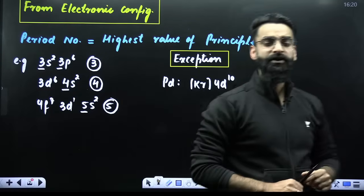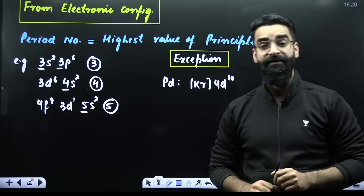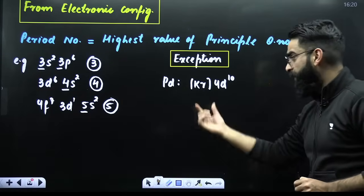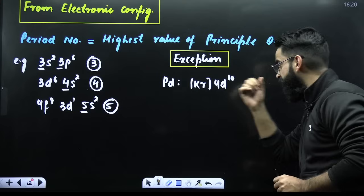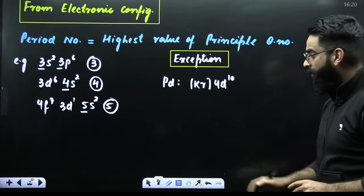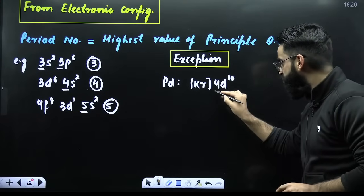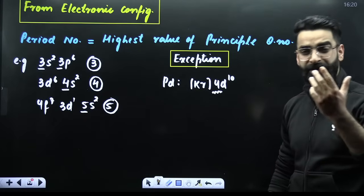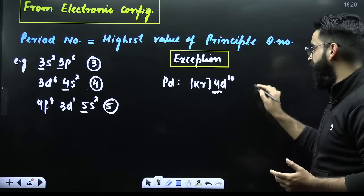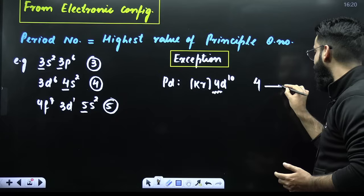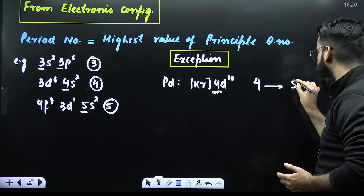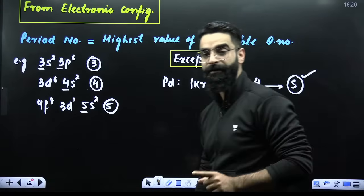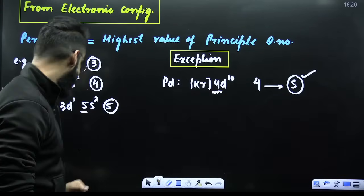One exception you need to remember directly — that is related to Palladium. If you look at Palladium's configuration, you would think the period number should be 4, but in reality it is 5. So remember it directly. That was our first point.